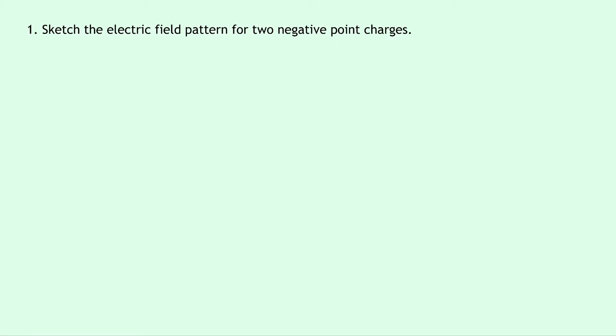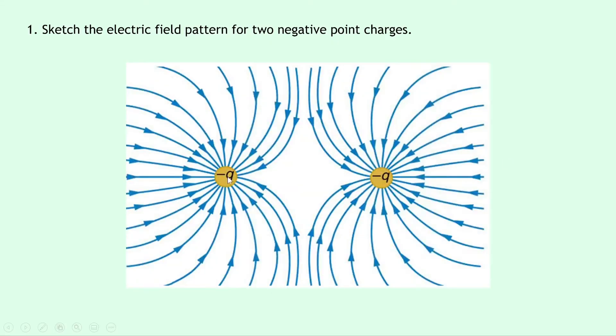So your sketch should look something like this and you'll notice we've got two negative charges near each other and we've got this space in the middle where there's no electric field lines and that's because the two negative charges will be repelling each other and we need to show that with the field lines.